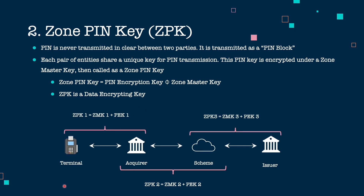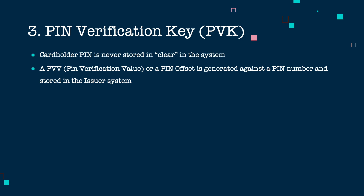Let's look at an example of how ZPK works. When we enter a PIN at a terminal, the terminal and acquirer have their own ZPK (ZPK1), and the PIN is transmitted under ZPK1 to the acquirer. The acquirer and scheme share a separate ZPK2, so the acquirer translates the PIN block from ZPK1 to ZPK2. The scheme and issuer share ZPK3, so the scheme translates the PIN block from ZPK2 to ZPK3 and sends it to the issuer.